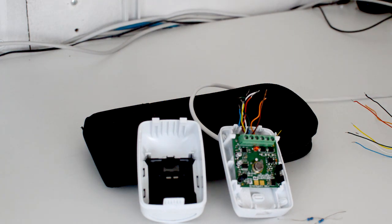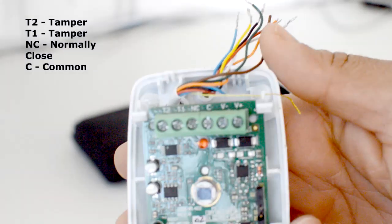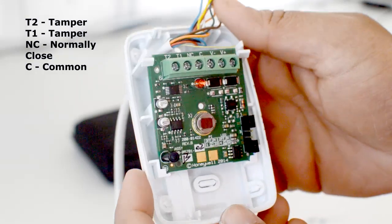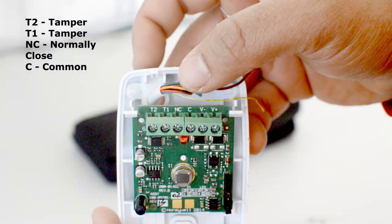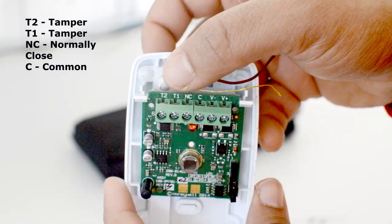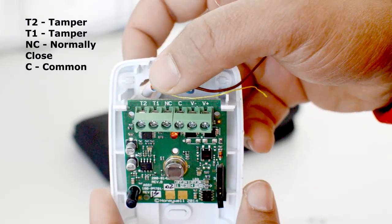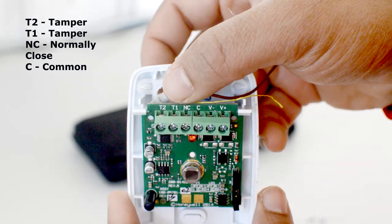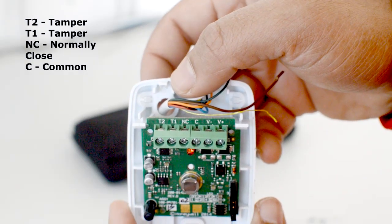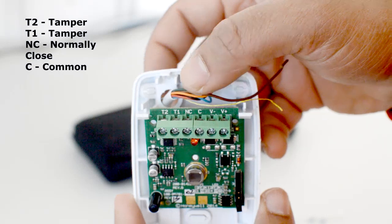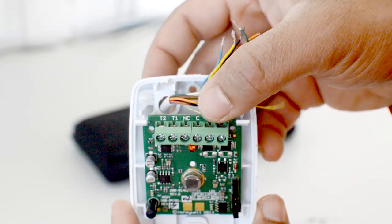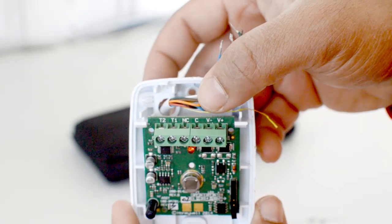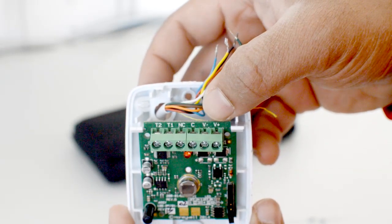Let's see how the wiring happens. First of all, you need to get familiar with the terminals. This is a grade 2 system. The first one is T2, which we call tamper, and T1. Then you have NC, normally closed. C is your common. Then you've got V minus and V plus, which is your voltage ground and then the positive.